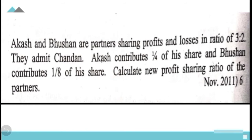Akash and Bhushan are partners sharing profits and losses in the ratio of 3:2. They admit Chandan. Akash contributes 1/4th of his share and Bhushan contributes 1/8th of his share. Calculate the new profit sharing ratio of the partners. This question had appeared in the year 2011 for 6 marks. The requirement is to calculate the new profit sharing ratio.